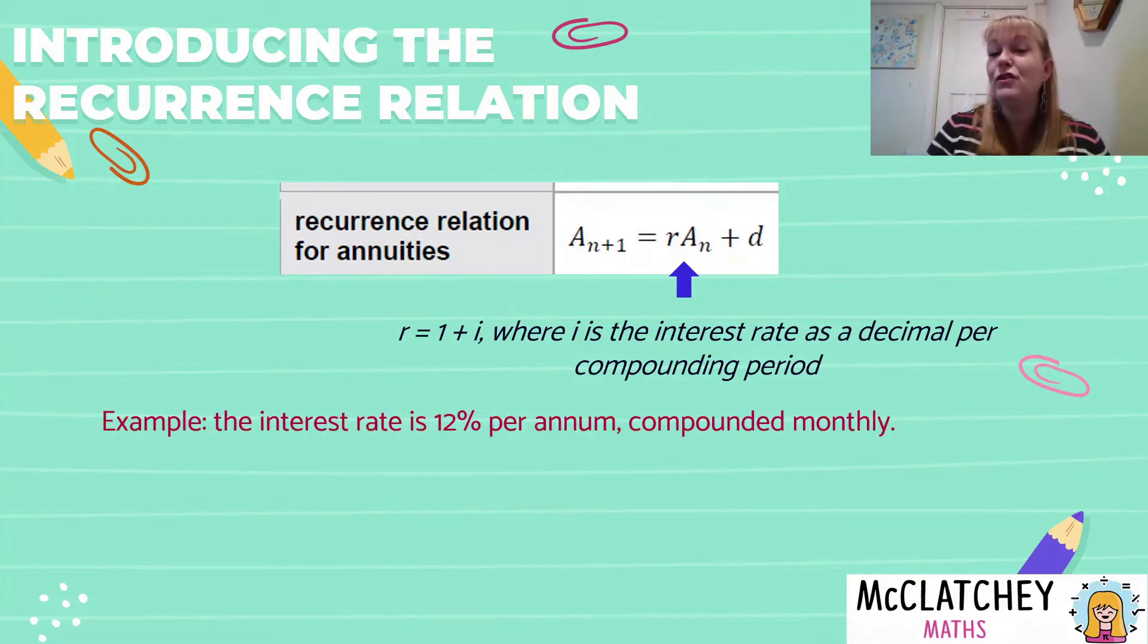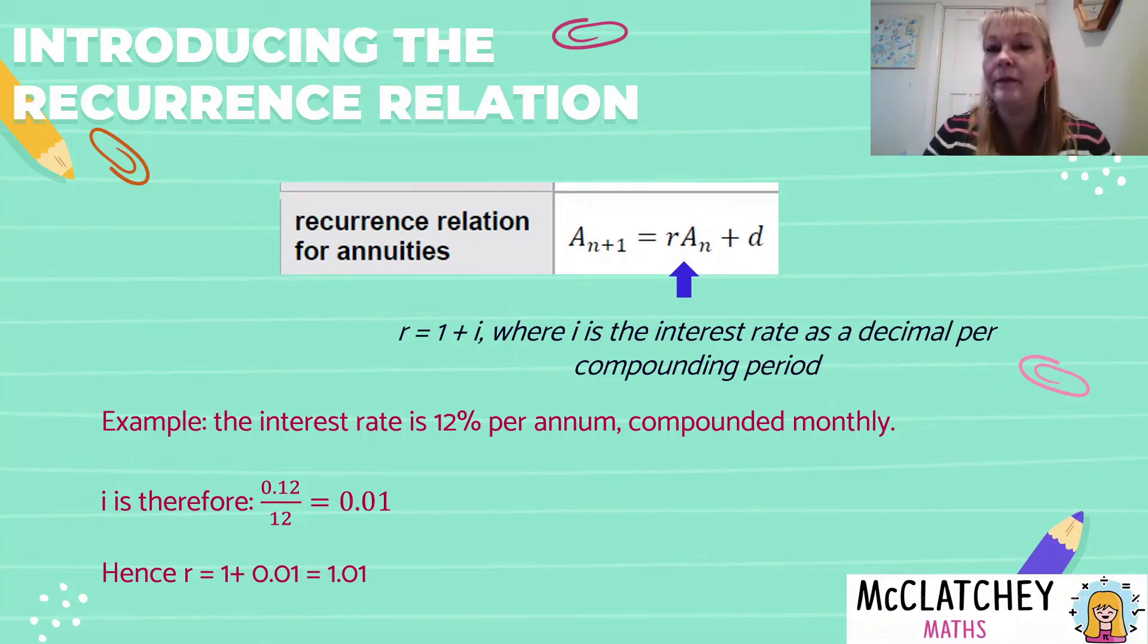Okay, so for an example, if you had an interest rate of 12% per annum, meaning per year, and that's compounding monthly, when we divide 12 by 12, we get one. So that's going to be 1%. And 1% as a decimal is 0.01. So that will be our value for I. However, we need to add one to that. So R will be 1.01.